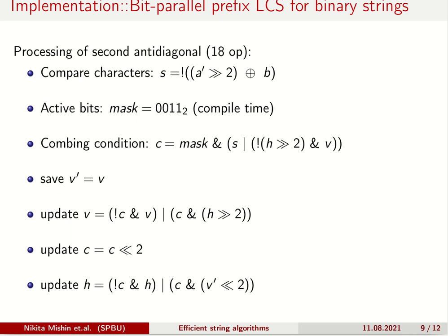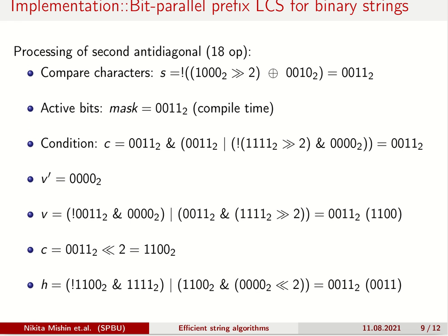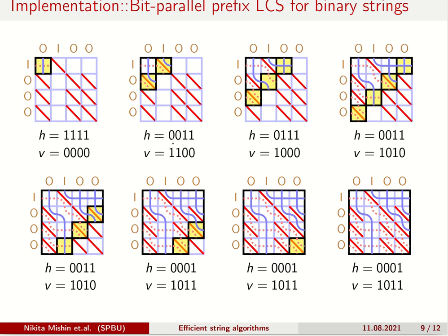First we compare symbols, aligning them, and then comparing them with XOR and NOT operations. Then we need a mask that indicates which elements are active on this iteration. On the first iteration there will be only one active bit, on the second it will be two, and so on. The combining condition is simply translated to boolean logic. Here we also use a mask to turn off non-involved bits. Then, similar to branch elimination for semi-local LCS, we update machine word of h and v. Here's an example with substitution. We can see that these numbers perfectly match with these ones.